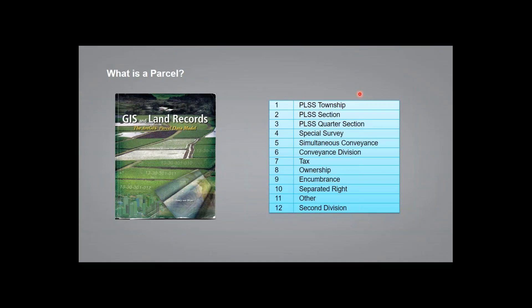Within the parcel fabric, when you enable the local government information model, you get 12 different parcel types. These parcel types have a history going back to around 2004 and were developed in cooperation with the Federal Geographic Data Committee — specifically the subcommittee on cadastral data — who developed the Cadastral Data Content Standard. ESRI took that information and incorporated it into the data model, so this is not an ESRI-invented data model but based on industry standards.